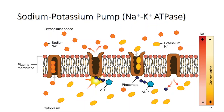The new shape of the pump protein favors binding of two potassium ions in the extracellular fluid to the pump protein. Step three: the binding of potassium triggers release of the phosphate group from the pump protein, which again causes the shape of the pump protein to change. Step four: as the pump protein reverts to its original shape, the cycle repeats.